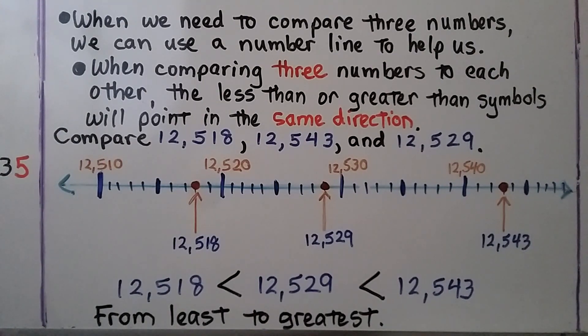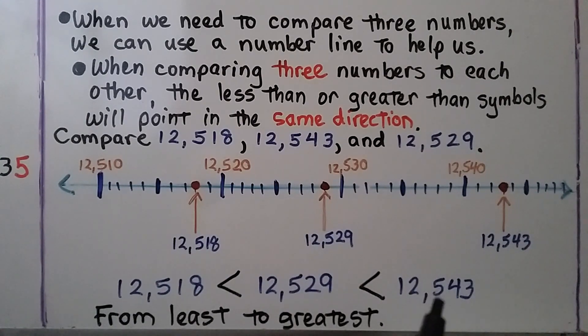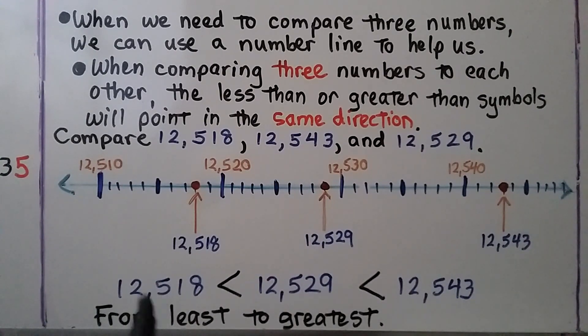If we needed to write them from greatest to least, we would switch the first and last numbers — we would swap their places.